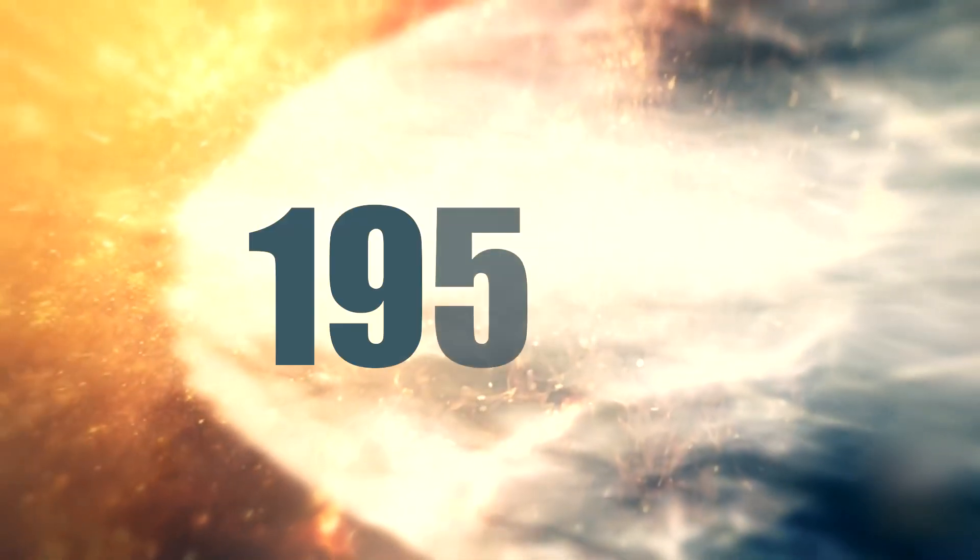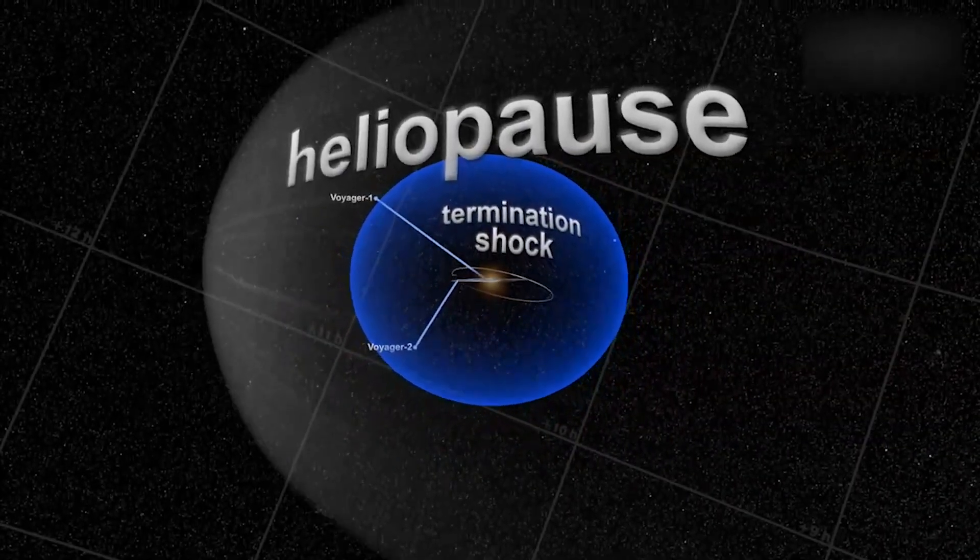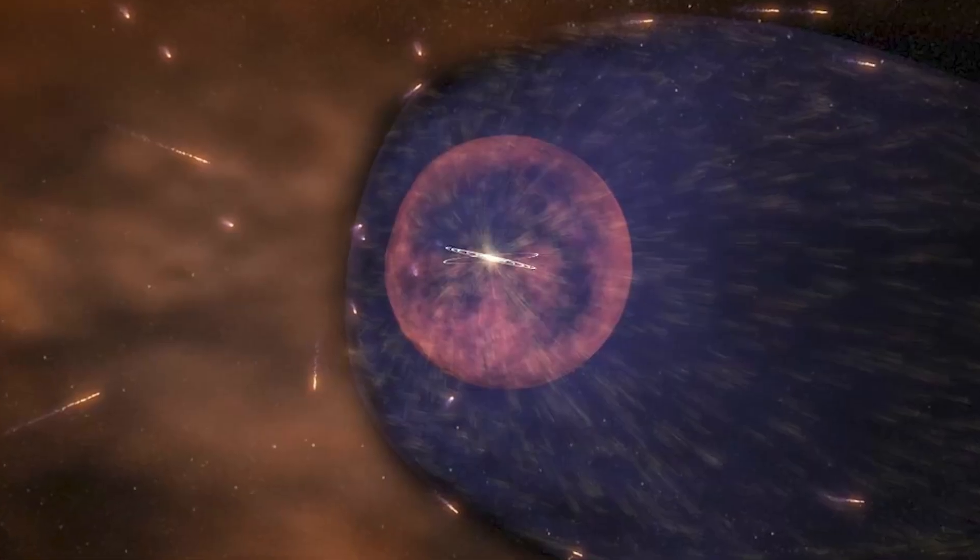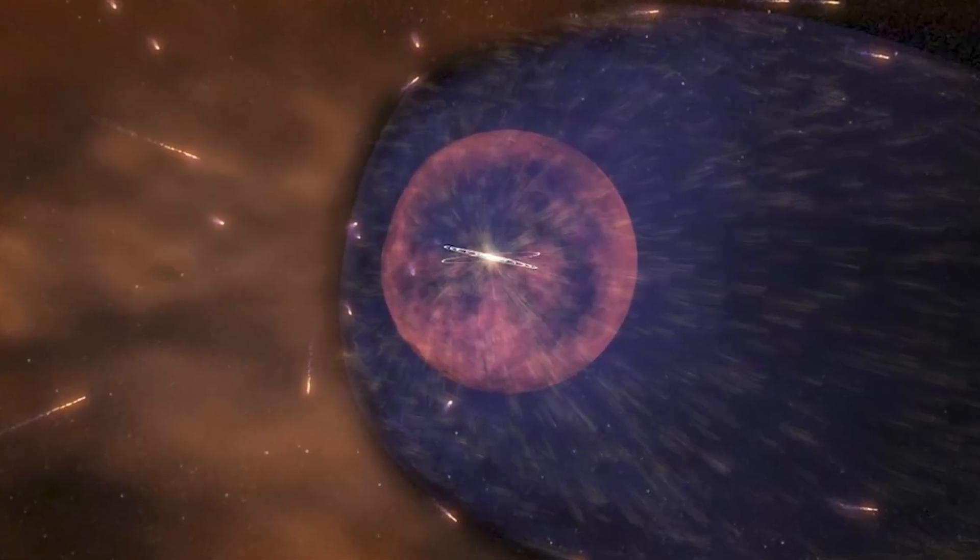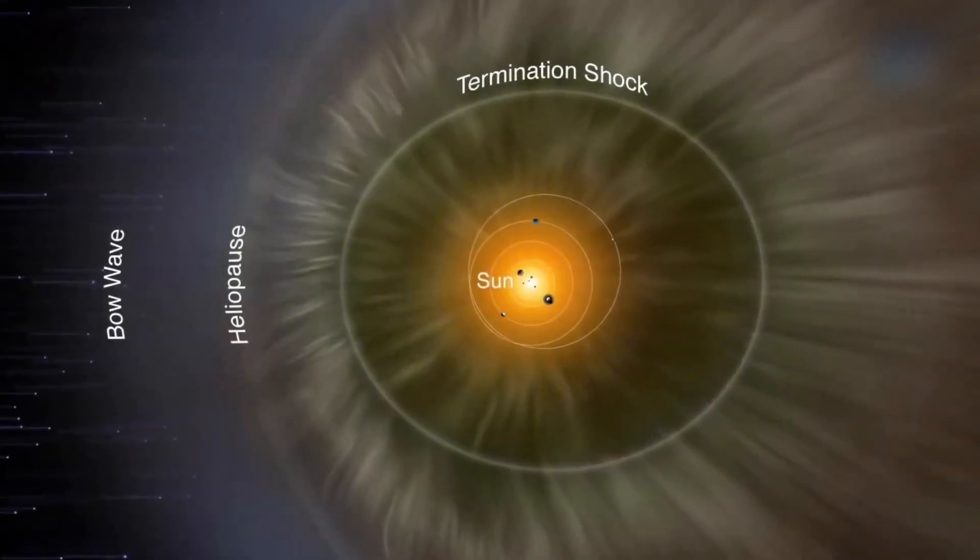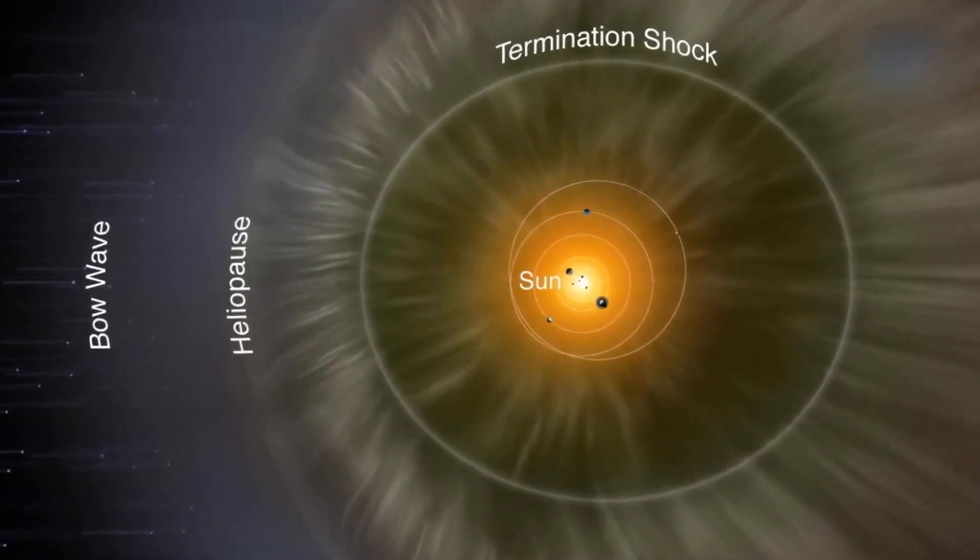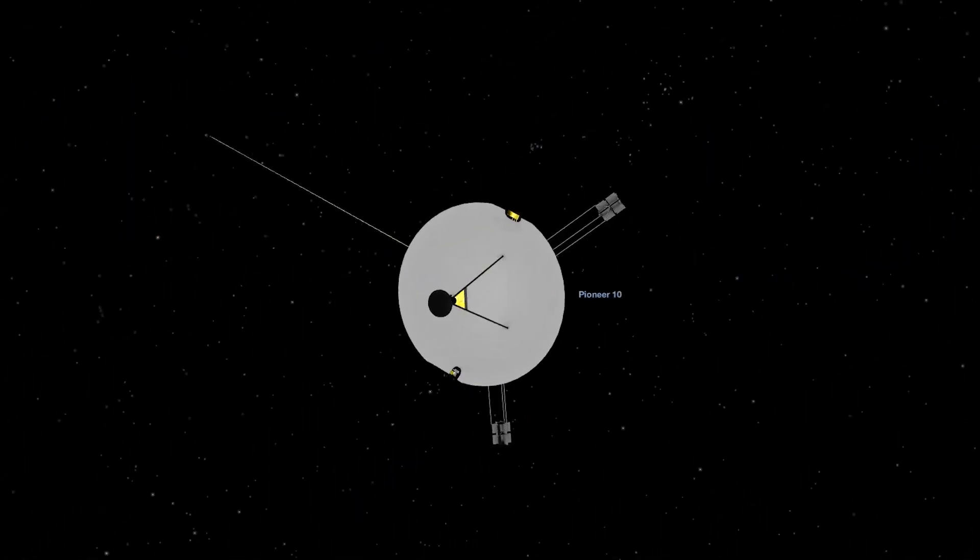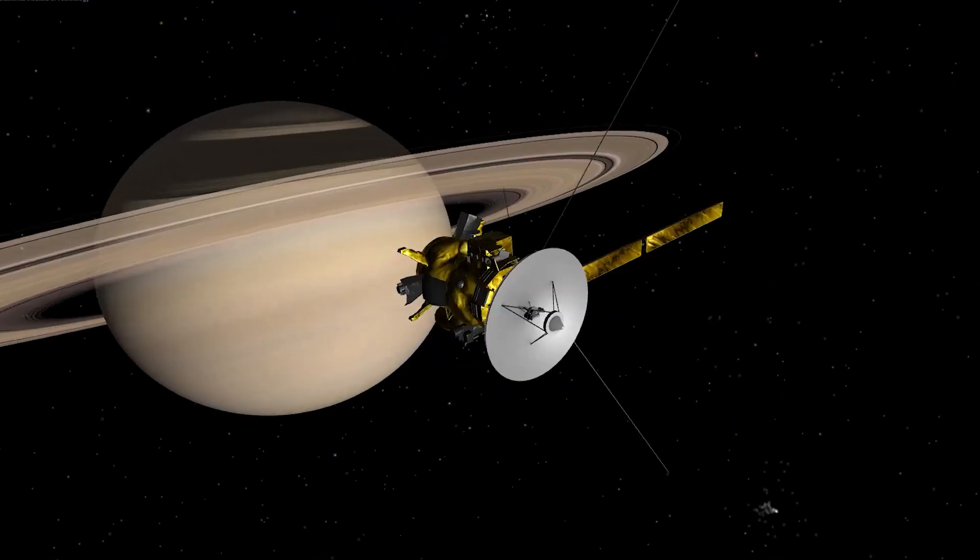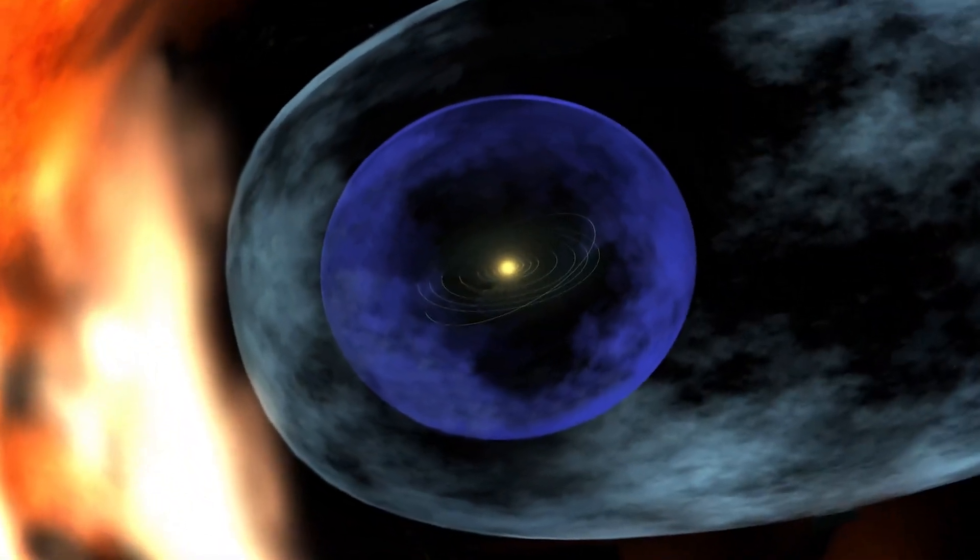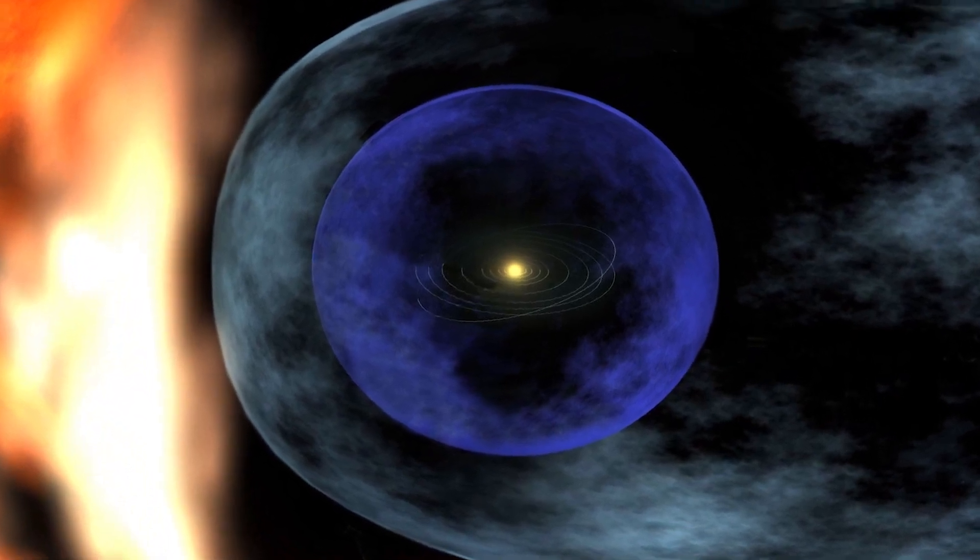Once the heliosphere was discovered in the early 1950s, the heliopause was a natural consequence of the space age's dawn. Once the heliosphere was proven to exist by satellite data, physics models showed without a doubt that the heliopause must exist somewhere. Evidence for the heliopause has begun to emerge.